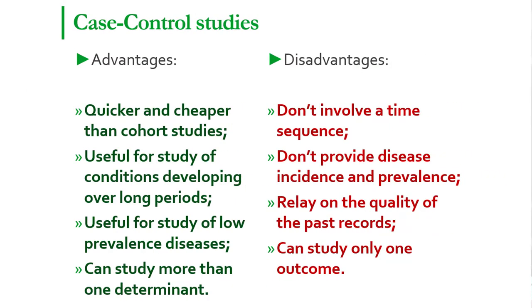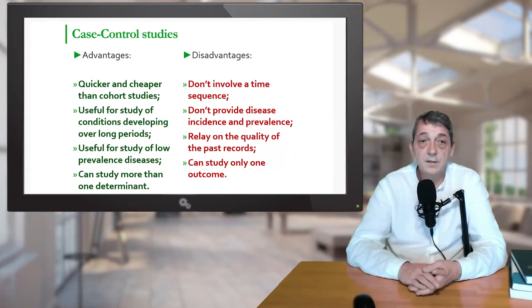The advantages of case control studies are that they are quicker and cheaper than cohort studies, they are useful for the study of conditions which develop over a long period of time, they are useful for the study of diseases of low prevalence, and we can study more than one determinant. The disadvantages are that they do not involve time sequence, they provide neither disease incidence nor prevalence, they rely on the quality of records collected in the past, and they can study only one outcome — because we group the animals by outcome at the beginning.